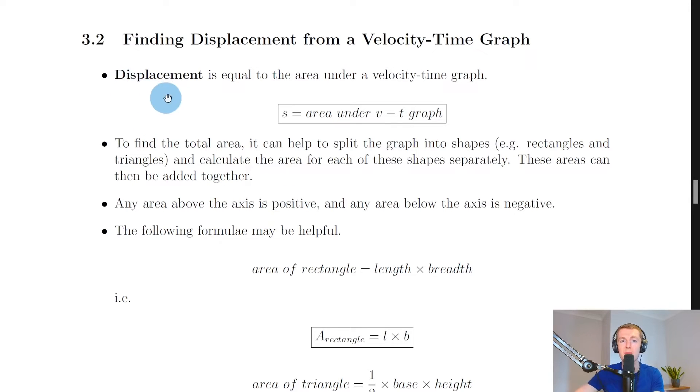Here it says that displacement is equal to the area under a velocity time graph. So a shorthand way to remember that is that displacement s is equal to the area under a vt graph and this means if we want to calculate displacement or distance from a velocity time graph we need to calculate the area. So how do we do that?